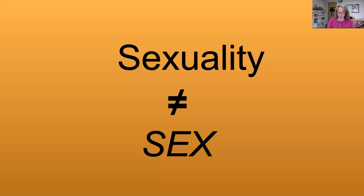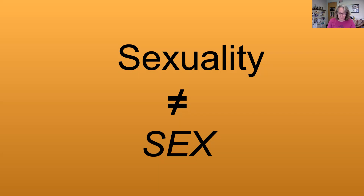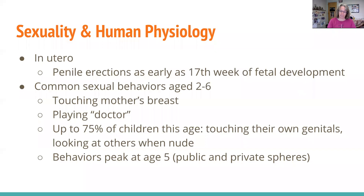A binary between children and adults has been set up — children as innocent, adults as knowledgeable and sexual beings. In schools and libraries, this association of adults with sexuality gets translated into sexuality equals sex. However, we're challenging that: sexuality does not equal sex, specifically referring to sexual intercourse. Even descriptions of sexual orientation lead many adults to presumptions of sex. We know that sexuality and human physiology are interchangeable — they are part of our humanity.